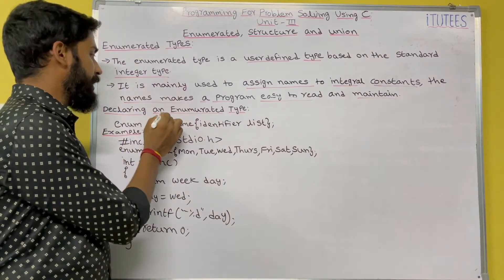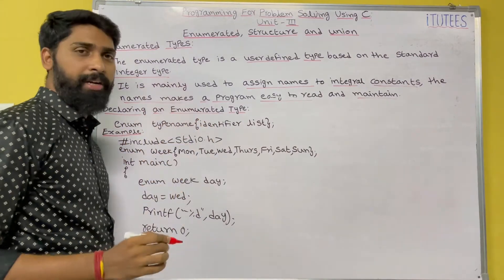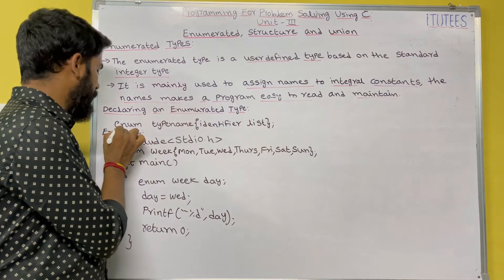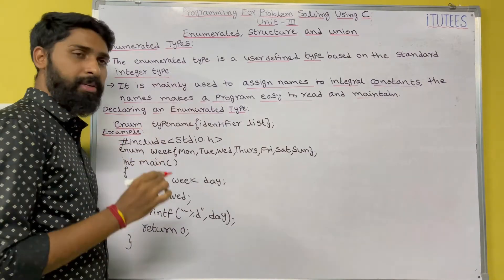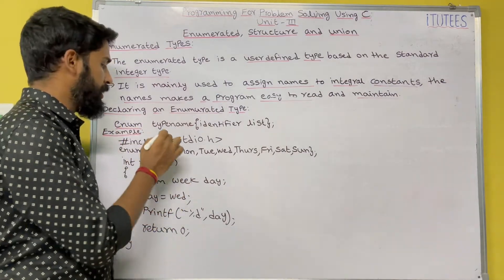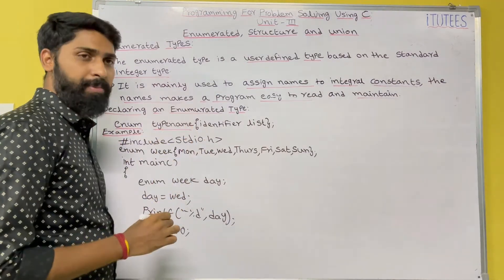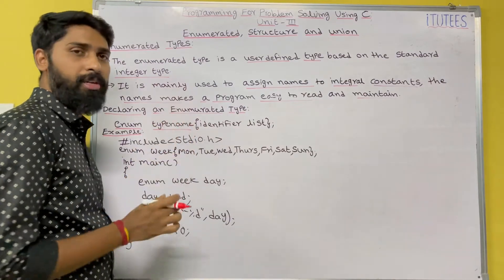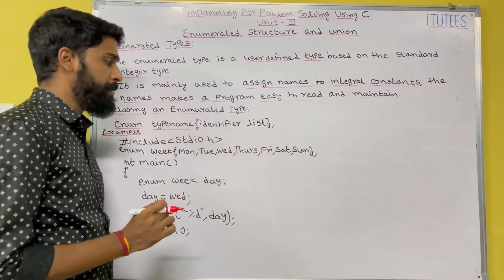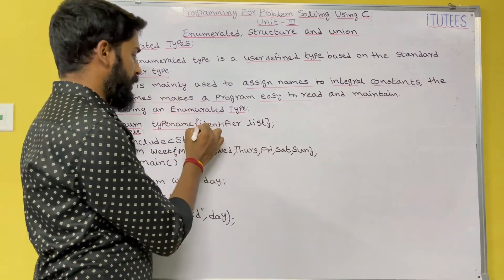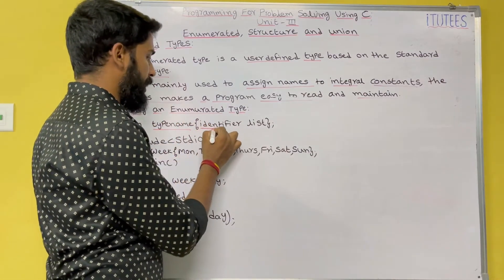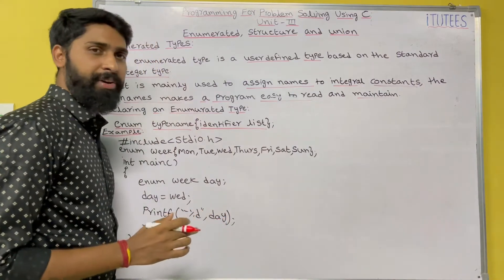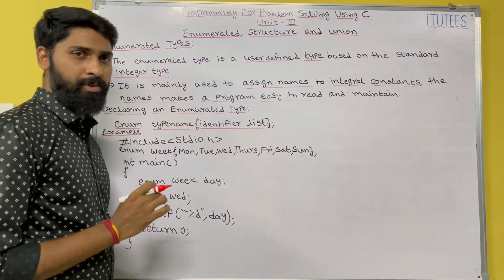For declaring an enumerated type, we are going to use the enum keyword, followed by a type name — where you give the user-defined data type name — and then in curly brackets you give the identifier list.